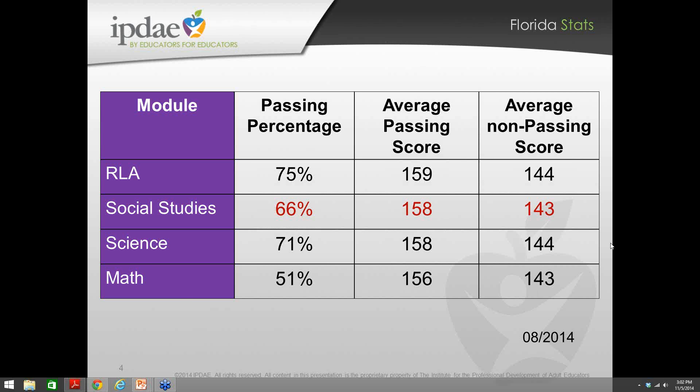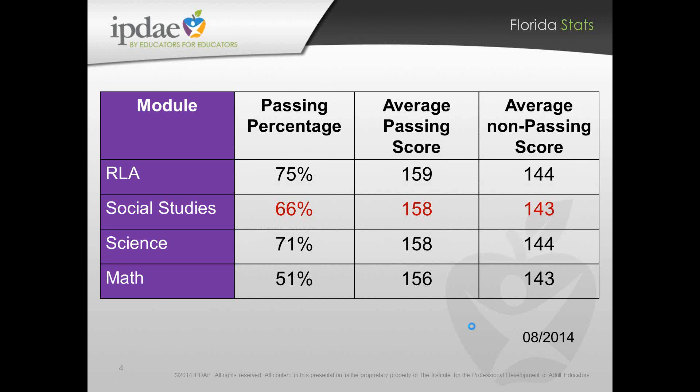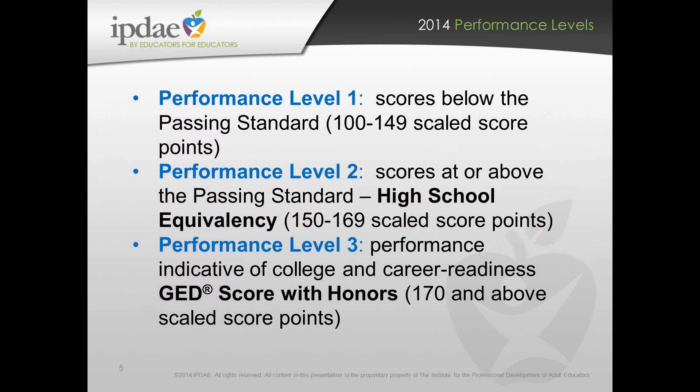Students aren't scoring in the 120s or 130s — 143 on Social Studies is that average. So let's see what we can do over the next 55 minutes or so to help students boost that score and get over that passing mark. Just as a reminder, because we've talked about these before, let's put things into perspective: we have three different performance levels for GED.